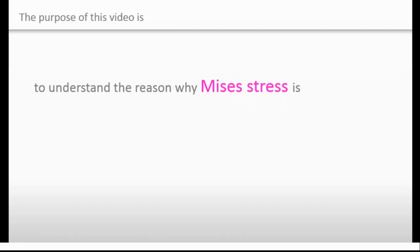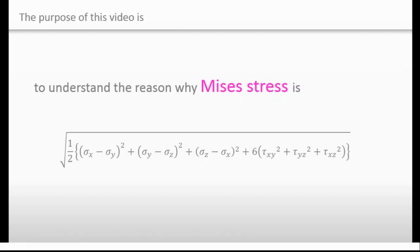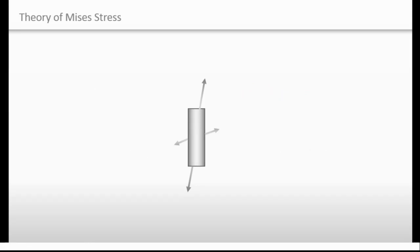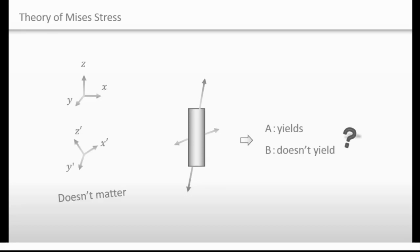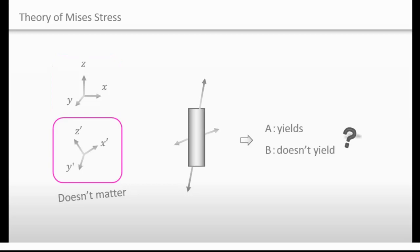The purpose of this video is to understand the reason why Mises stress has its particular expression. If you use the Mises stress function, you can determine whether a material will yield or not — but why? In a previous video, it was introduced that whether a material will yield or not doesn't depend on coordinate systems. So, firstly, let's find a function that doesn't depend on coordinate systems.